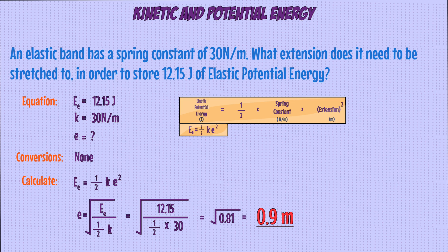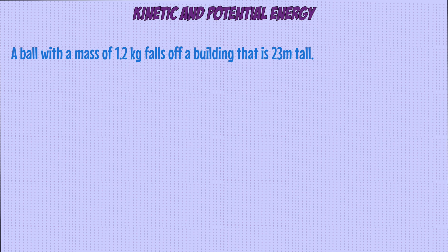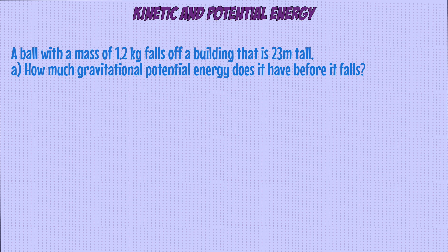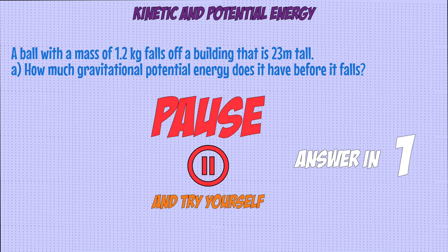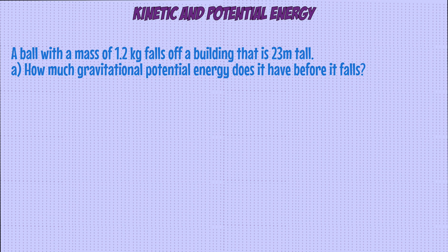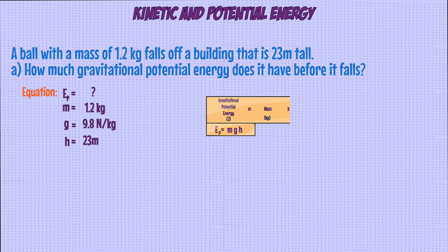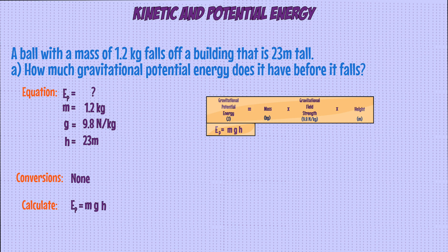Let's try one more example where energy stores are transferred from one type to another. We have a ball with a mass of 1.2 kilograms falling off a building that's 23 meters tall. Part A asks: how much gravitational potential energy does the ball have before it falls? We have a mass of 1.2 kilograms, gravitational field strength of 9.8 newtons per kilogram, and height of 23 meters. Using the gravitational potential energy equation with no conversions needed, we sub in 1.2 times 9.8 times 23, which gives an answer of 270.48 joules.